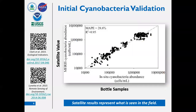Cyanobacterial abundance was also compared to field data to evaluate performance, and there is strong agreement across several orders of magnitude in cells per milliliter. This work has been published, with two papers referenced. The take-home message is that the satellite results match field observations quite well.